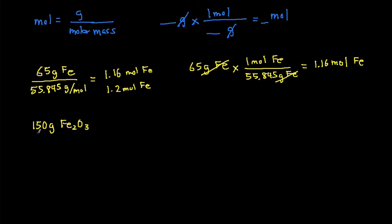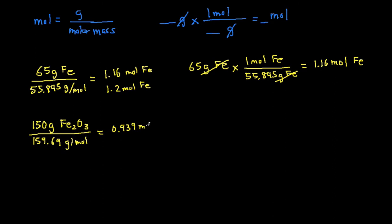we're just going to take the grams and divide it by the molar mass. The molar mass of iron oxide is 159.69 grams per mole. So we put that into the calculator and we get 0.939 moles of iron oxide.